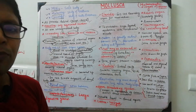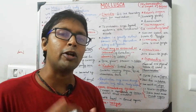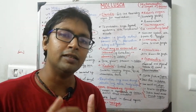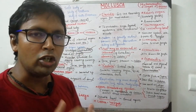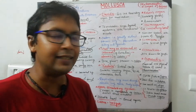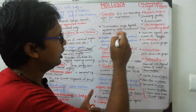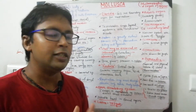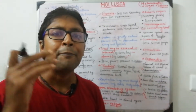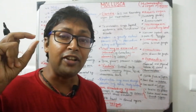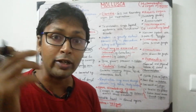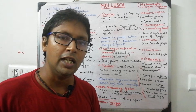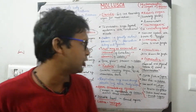The body is triploblastic, developed from three germ layers: ectoderm, mesoderm, and endoderm. The outer epidermis is single-layered and contains unstriated muscles. The coelom is very reduced in molluscs, present only in the pericardium, kidney, and gonads.